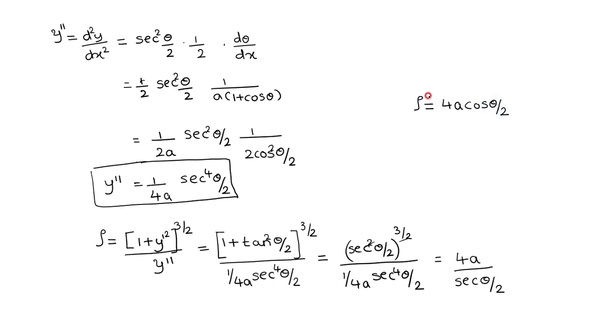We have proved that the radius of curvature of the cycloid is 4a cos(θ/2). Thanks for watching.